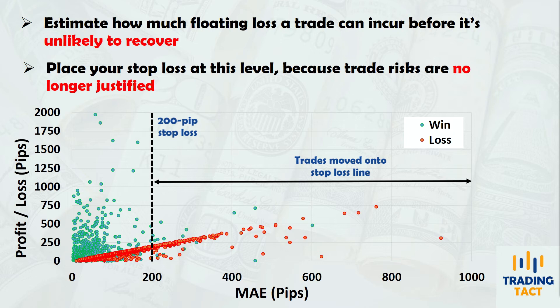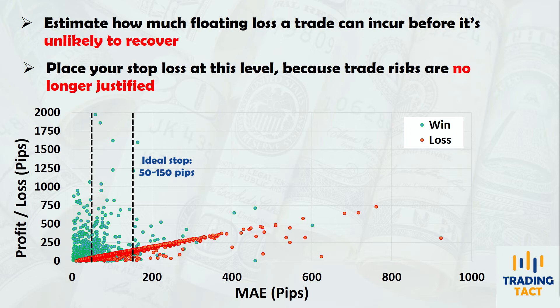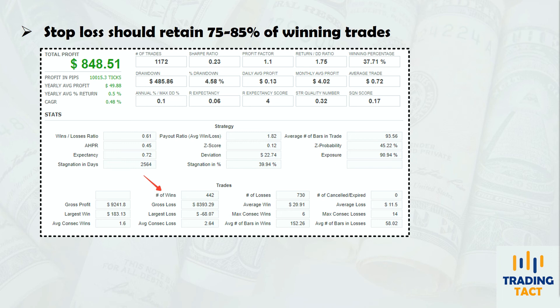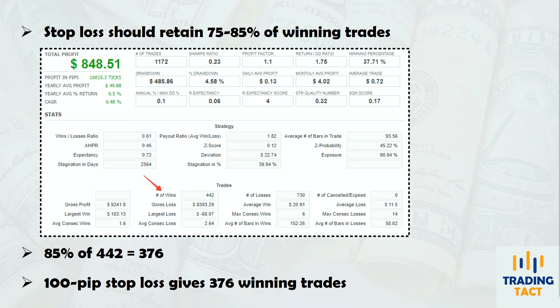From the MAE chart, you can estimate that the ideal stop loss would be in the 50 to 150 pip range. As a first pass, I recommend placing your stop such that you retain 75 to 85 percent of your winning trades. I will demonstrate this using an 85 percent cutoff. Based on the backtest results, this 85 percent cutoff means that any trade that hits the stop level has only a 15 percent chance of recovery. The reversal strategy contains 442 winning trades, meaning I need a stop level that retains 376 winning trades. This corresponds to about a 100 pip stop loss.